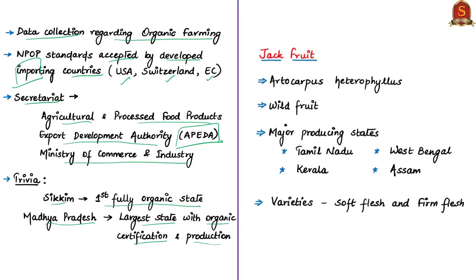This news also speaks about jackfruit. The scientific name of jackfruit is Artocarpus heterophyllus. It is a wild fruit that grows on jack trees. The major producing states of jackfruit are Tamil Nadu, Kerala, West Bengal and Assam. Jackfruit is also grown in the states of Bihar, Uttar Pradesh and Odisha. There are generally two types of jackfruit: the soft flesh variety and the firm flesh variety.